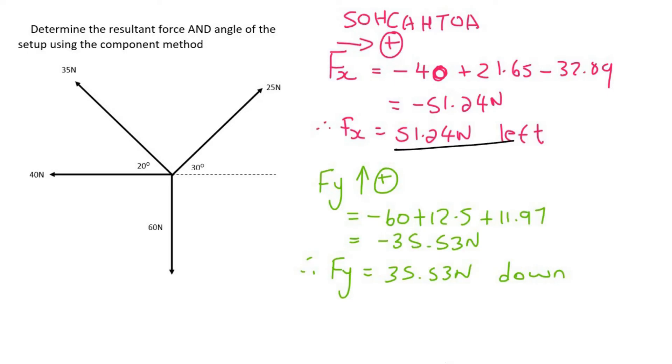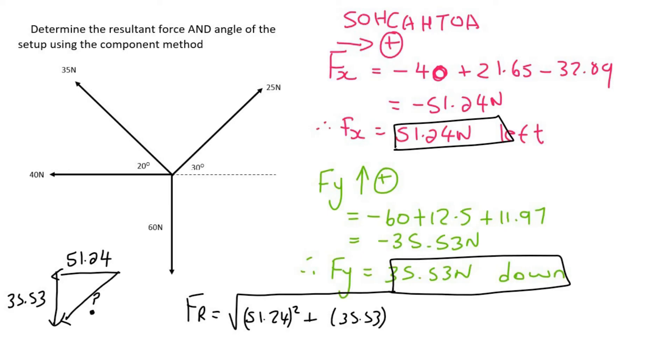So we're nearly done. Now we've got the left and the right, and we've got the up and the down, so now we can do Pythagoras. If we're going a little bit to the left and a little bit down, then your triangle would probably look something like that. So the left would be 51.24 and the down is 35.53. We could use Pythagoras to find this length over here. I'm going to call that Fr because that's the result. And that's going to be 51.24 squared plus 35.53 squared. That's just basic Pythagoras. And so that's going to give us 62.35 Newtons. So there's our answer, 62.35, which is very similar to what we got when we did the construction method.